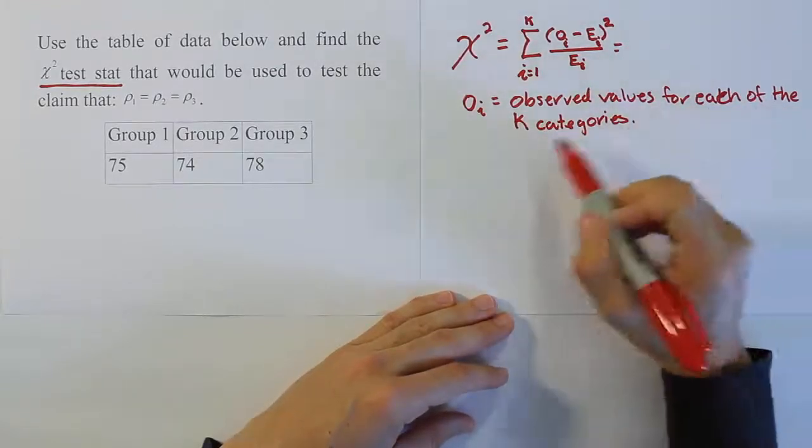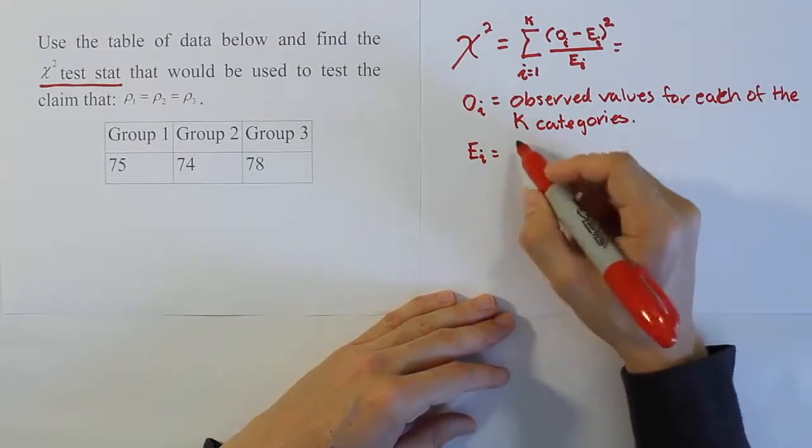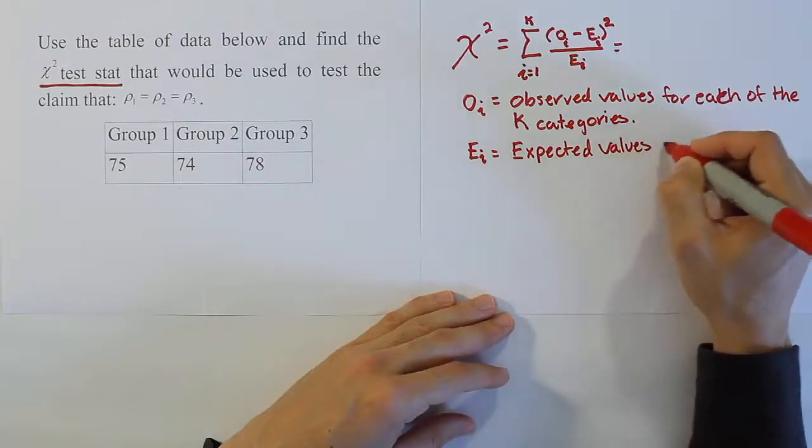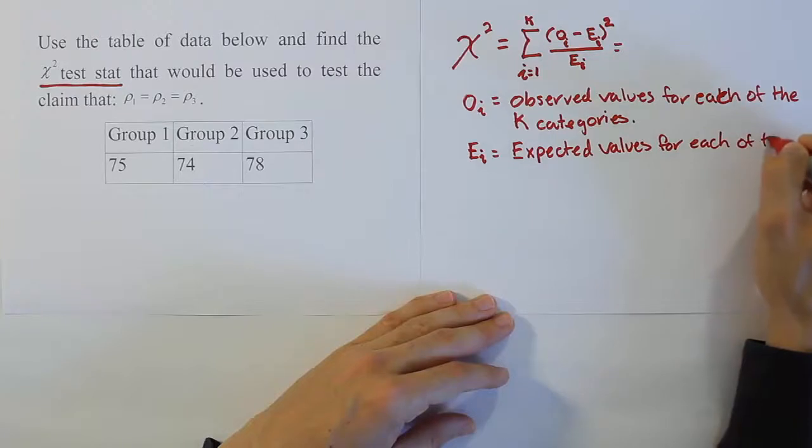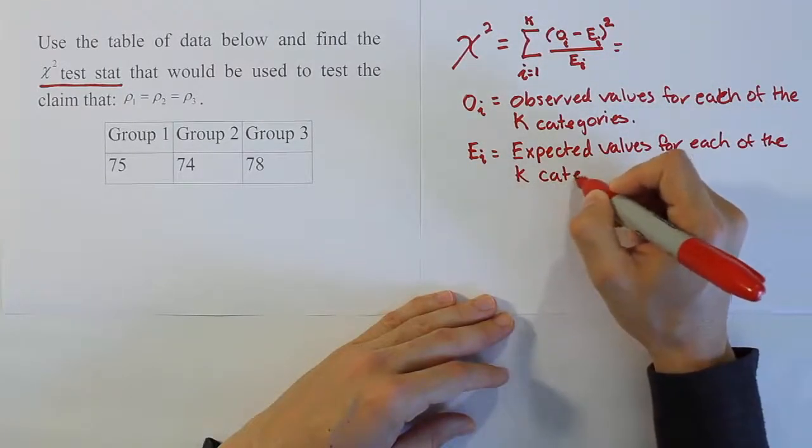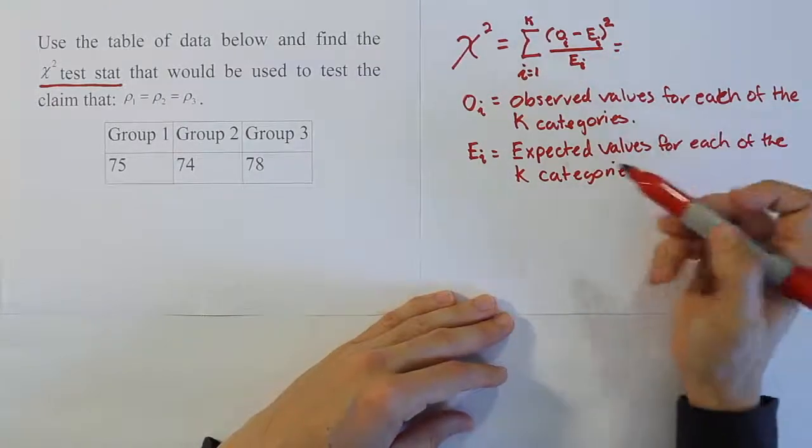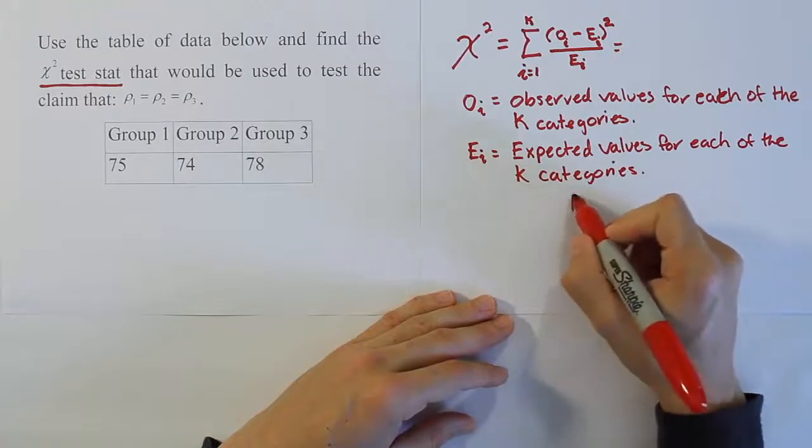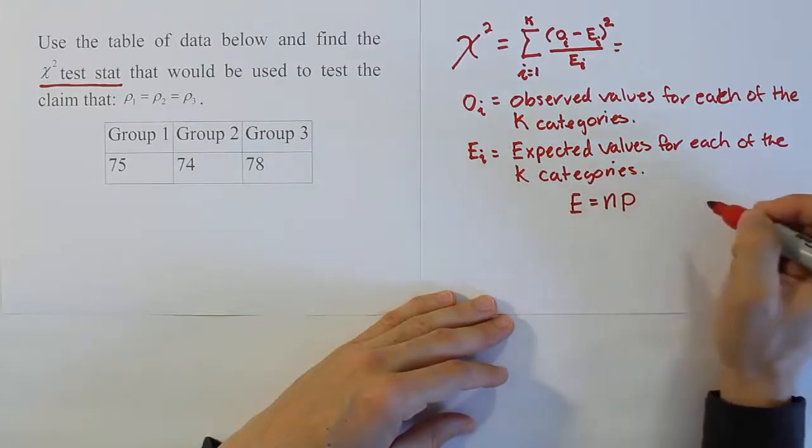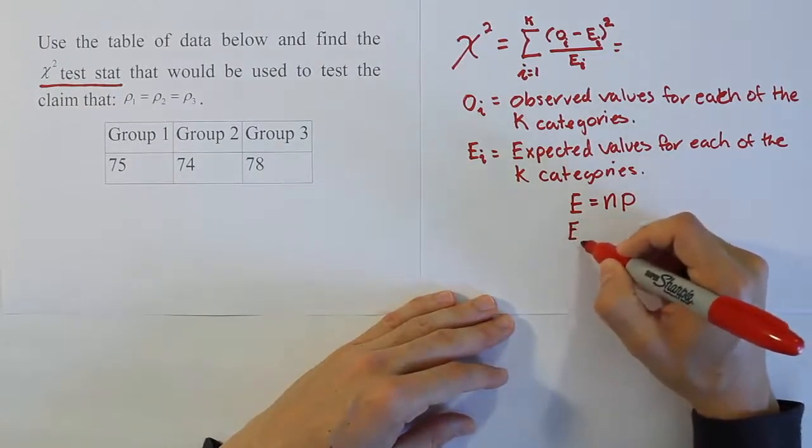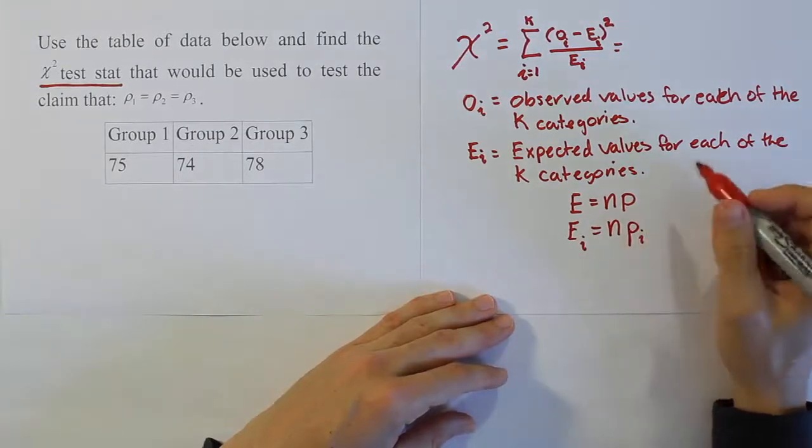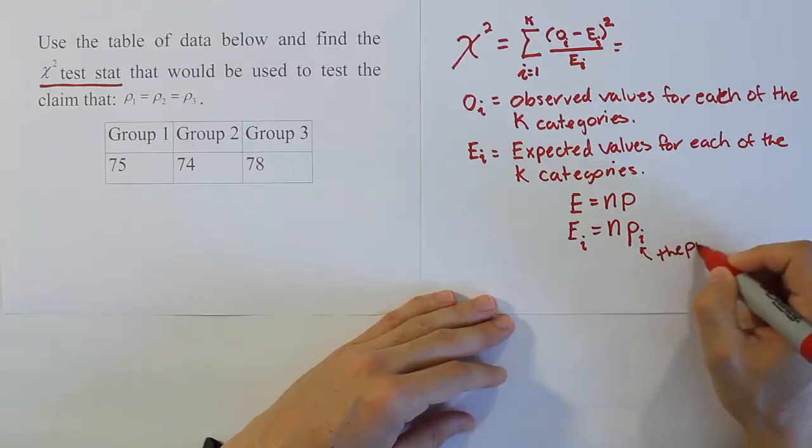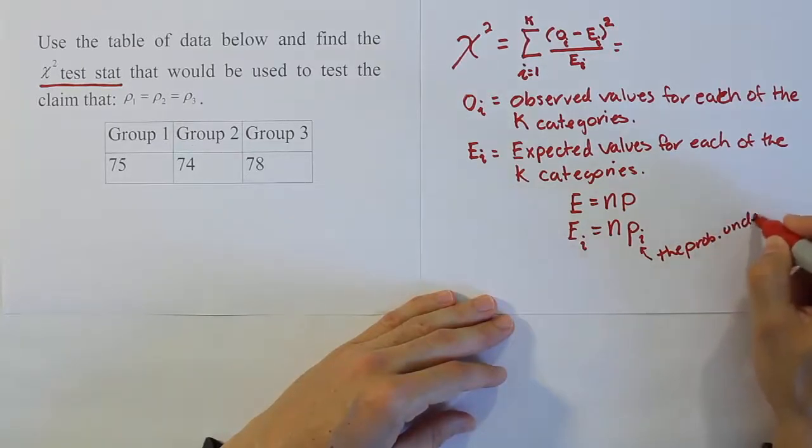And then E sub i is going to be the expected values for each of the k categories. So the observed values are easy because you just see the numbers, you put them in the formula. So there's nothing to do there in terms of calculation. But the expected values have a formula. So let's remember that expectation is n times p. And so if you're talking about for a specific value, ei equals n times pi, where p is basically the probability according to H0.